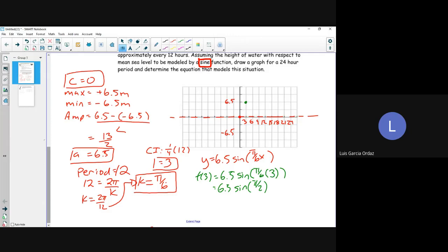So our next value is 6, so we want to sub in 6 for x. So you get f at 6, which is equal to 6.5 times sine of pi over 6 times 6. And what does the bracket simplify into? So sine of pi, 0 times 6.5 is 0.